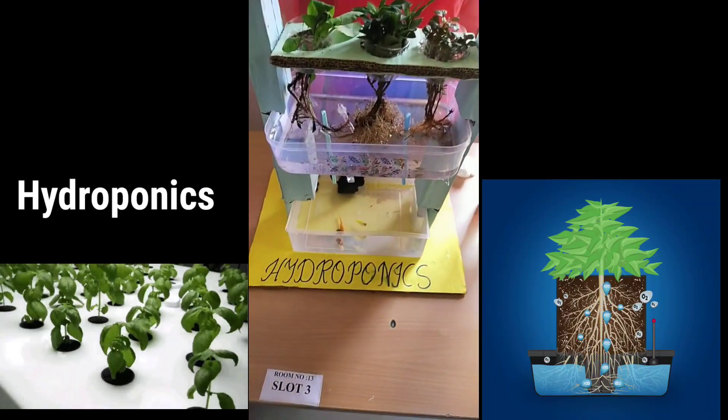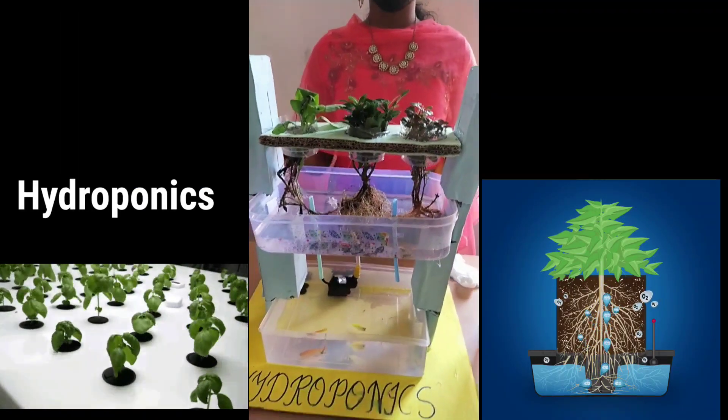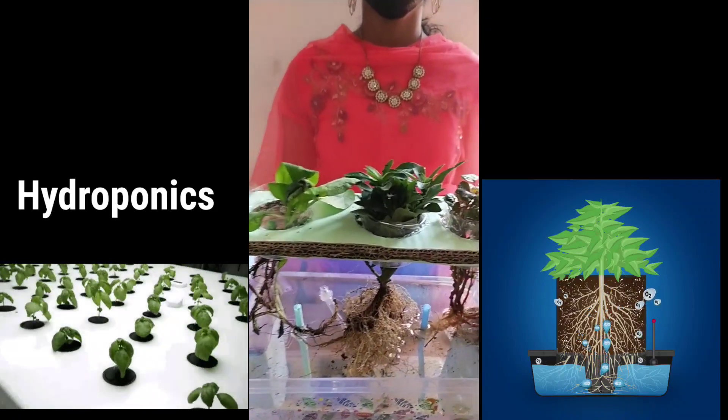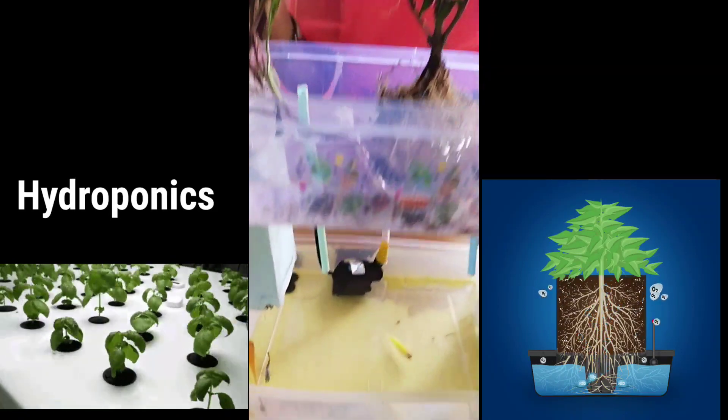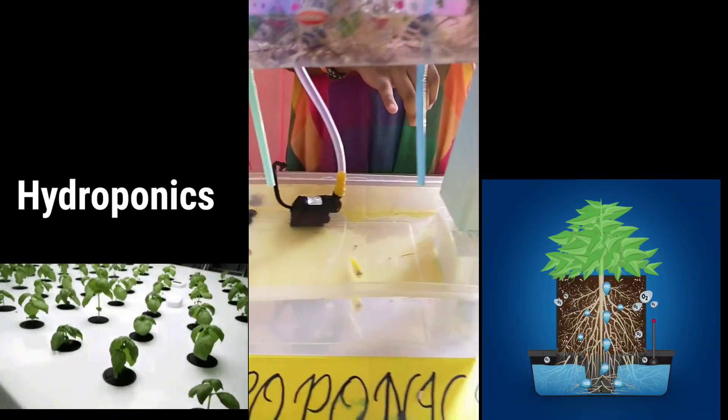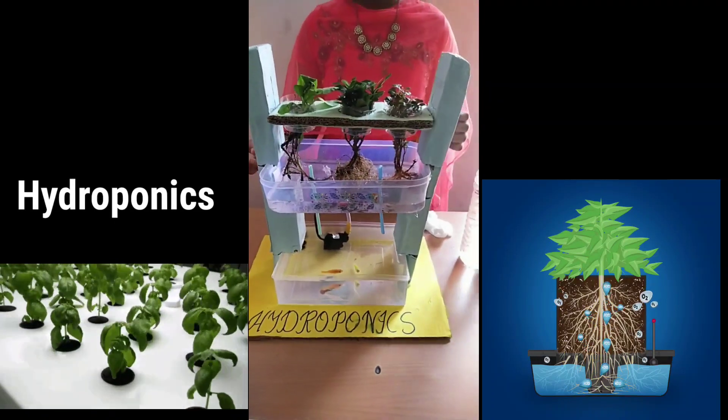Hydroponics is a concept where the nutrients are delivered to the plant roots from waste they released from the fish tank. Here you can see fish tank in the bottom level, roots in the middle level, and growing plants in the upper level.